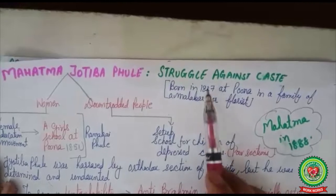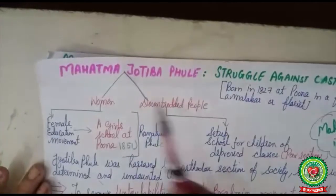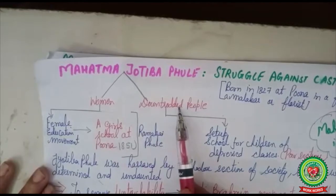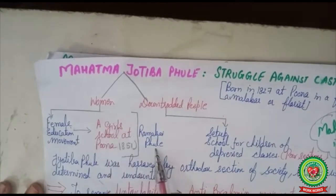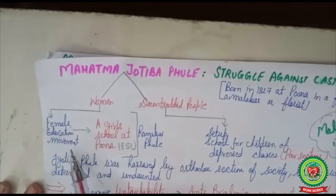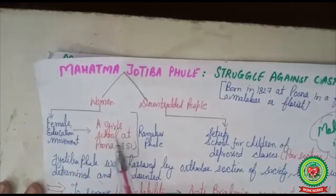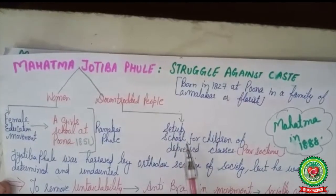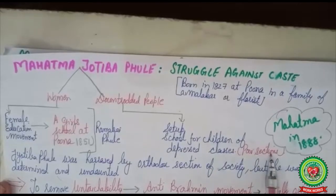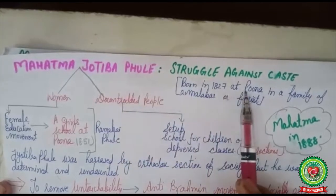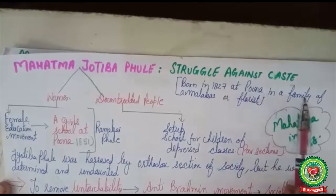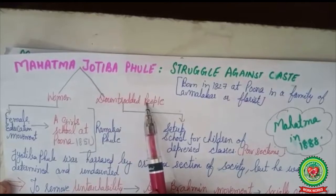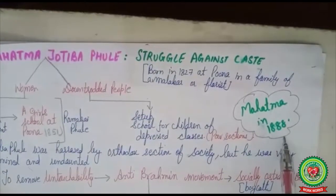The last term is 'downtrodden,' meaning economically and socially backward people. In this session we are going to discuss those reformers who stood against the caste system. We start with Mahatma Jyotiba Phule, who worked for women empowerment and downtrodden people. Along with his wife Ramabai Phule, he worked for the female education movement, setting up a girls' school at Pune in 1851. He was born in 1827 in Pune in a family of malakar, or florist, and was given the title of Mahatma in 1888.